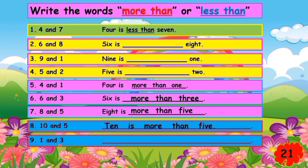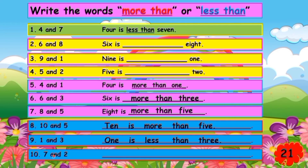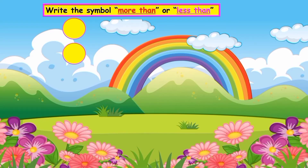Next: one and three. Is that more than or less than? That's right, it is less than. So write: one is less than three. Very good. And last, number seven and two — is that more than or less than? That's right, it is more than. So write: seven is more than two.